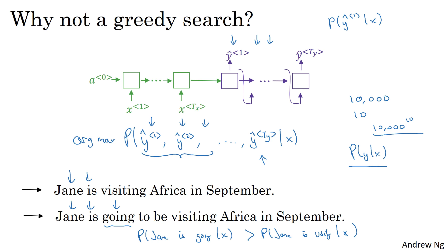And what an approximate search algorithm does is it will try, it won't always succeed, but it will try to pick the sentence Y that maximizes that conditional probability. And even though it's not guaranteed to find the value of Y that maximizes this, it usually does a good enough job.